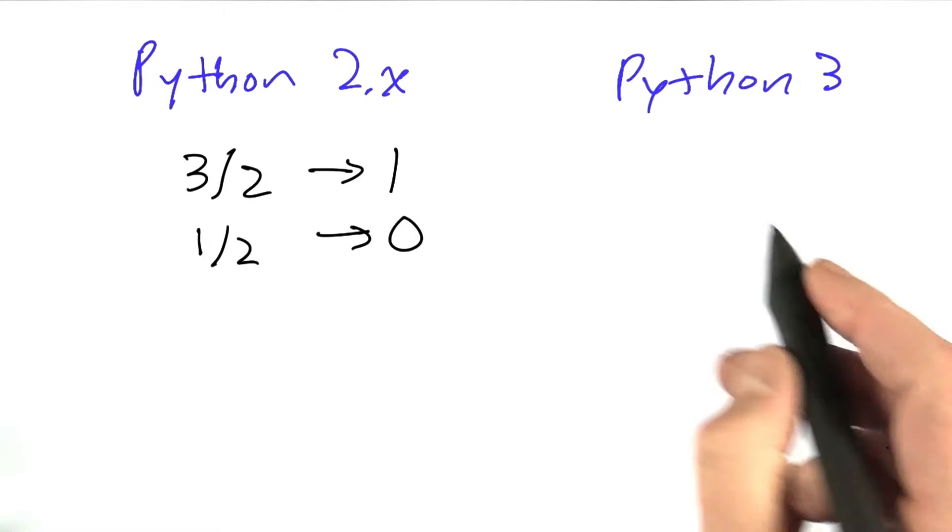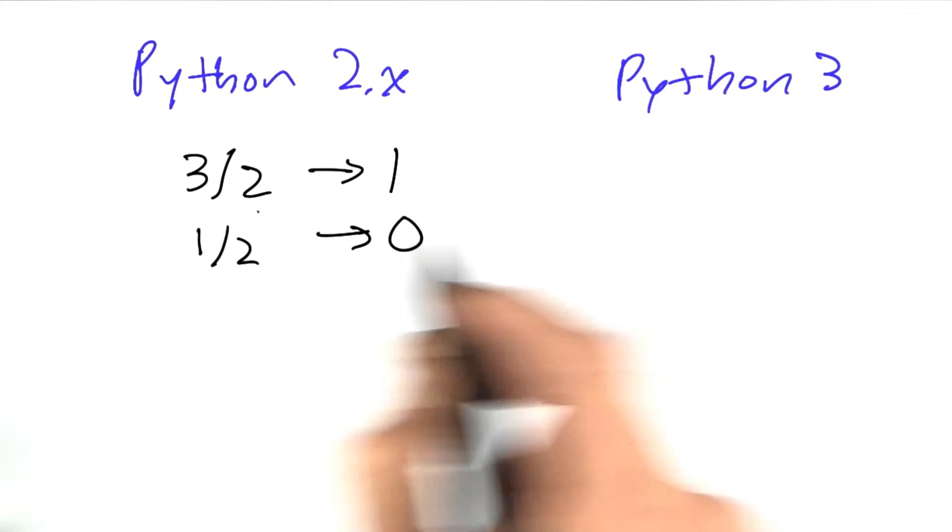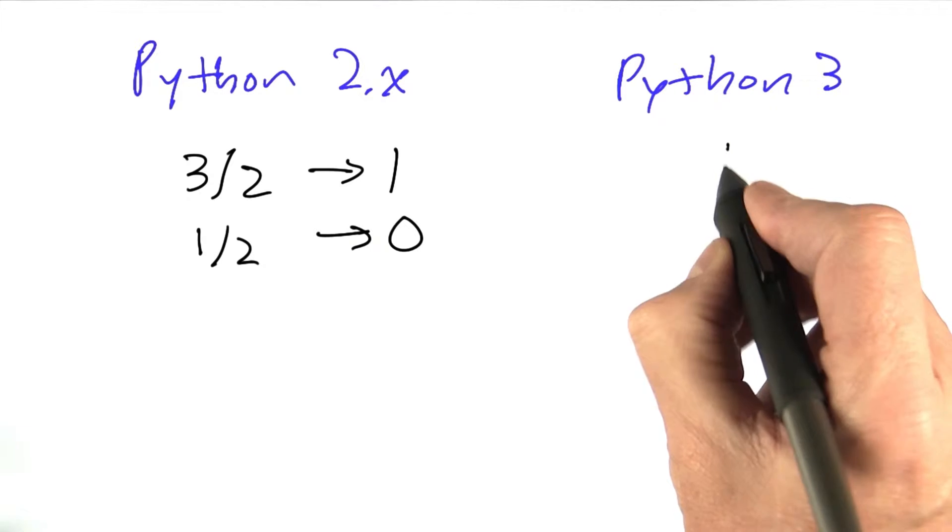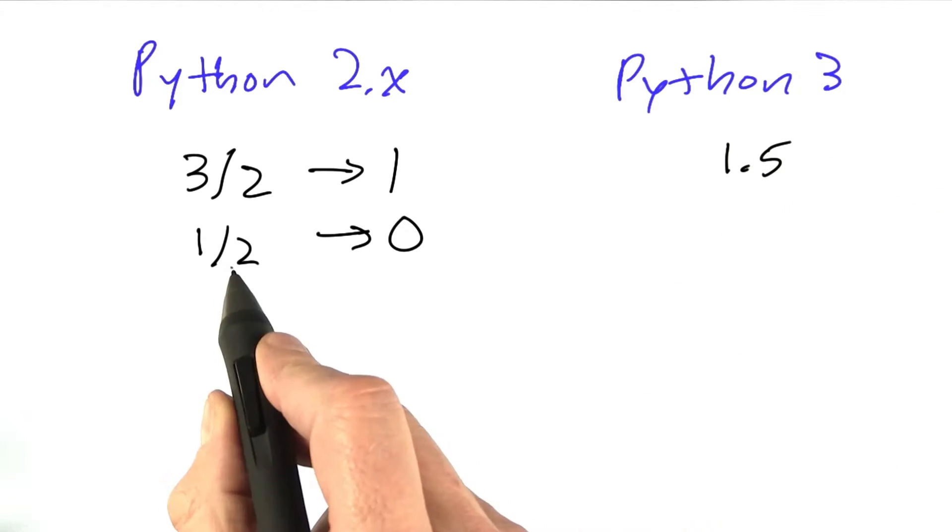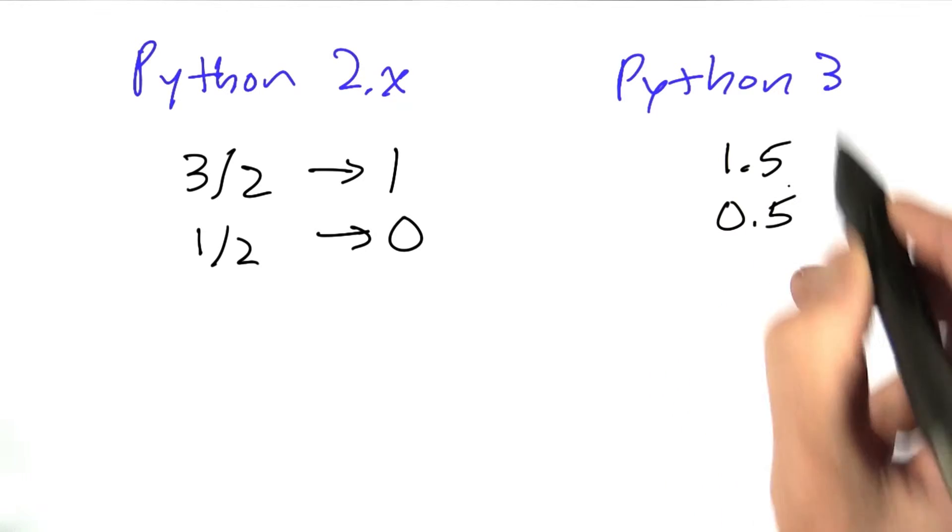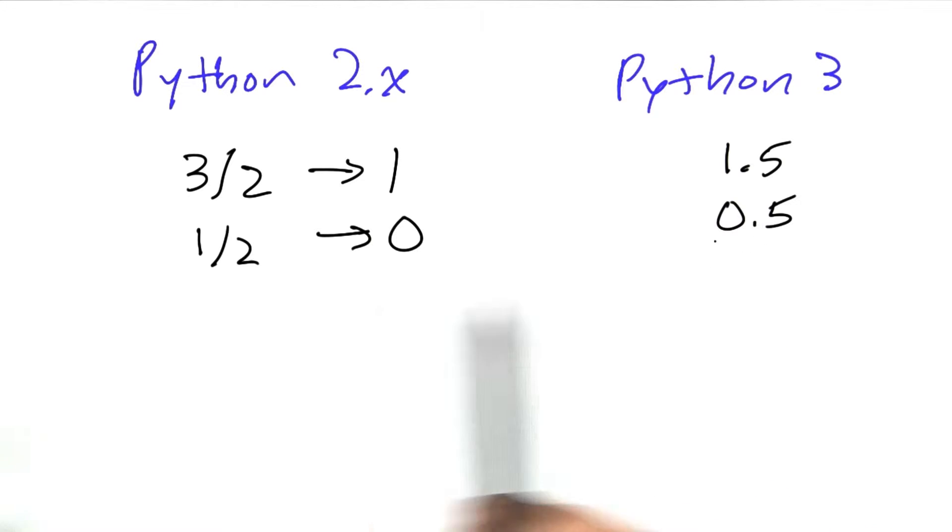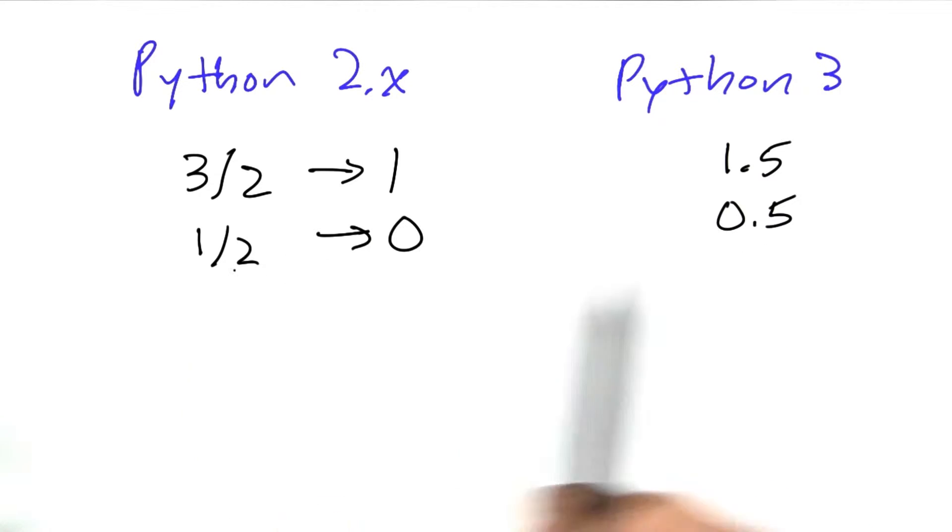In Python 3, the designers decided that's really confusing. What you really want when you divide 3 over 2 is 1.5, and when you divide 1 over 2, you want 0.5. That's what Python 3 does. It changes the result from an integer to a floating-point number if that's the best you can do.